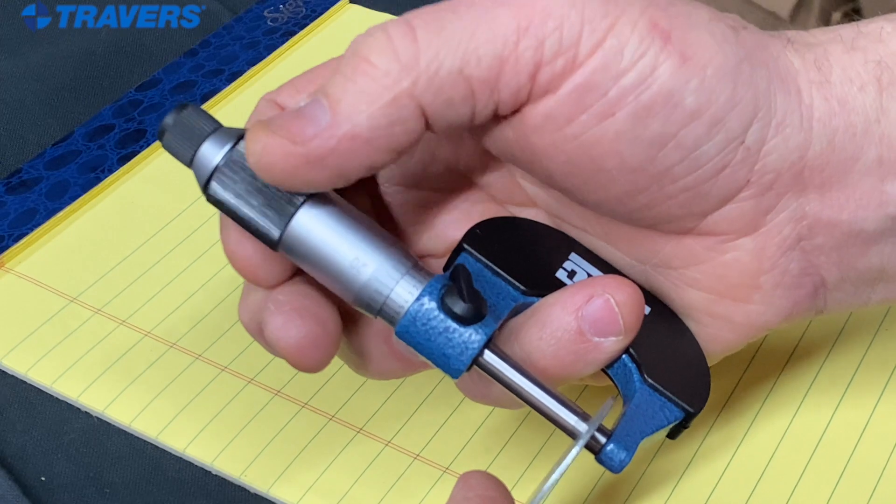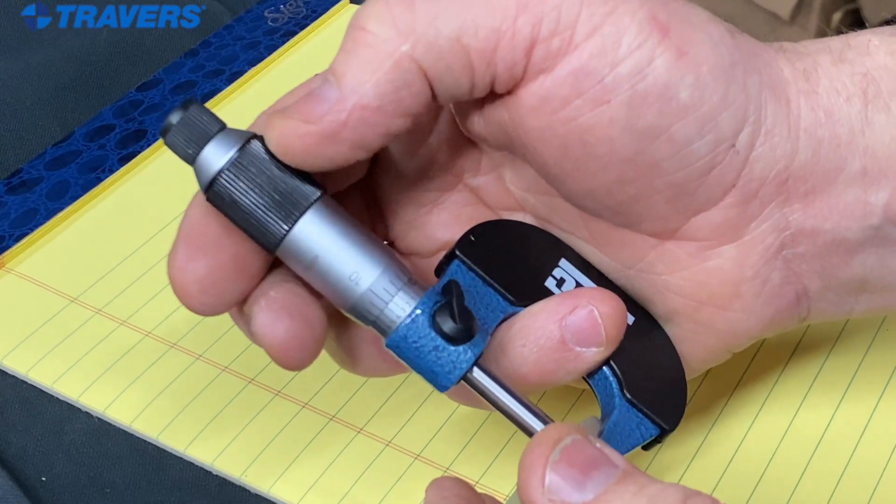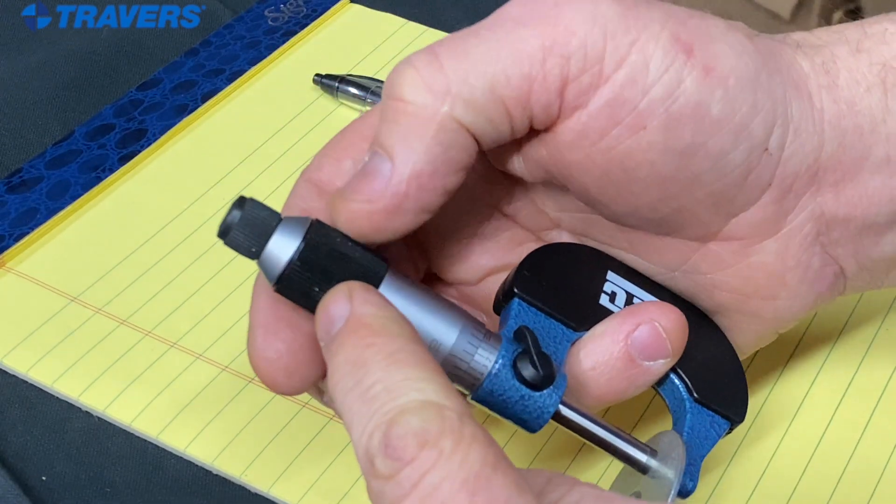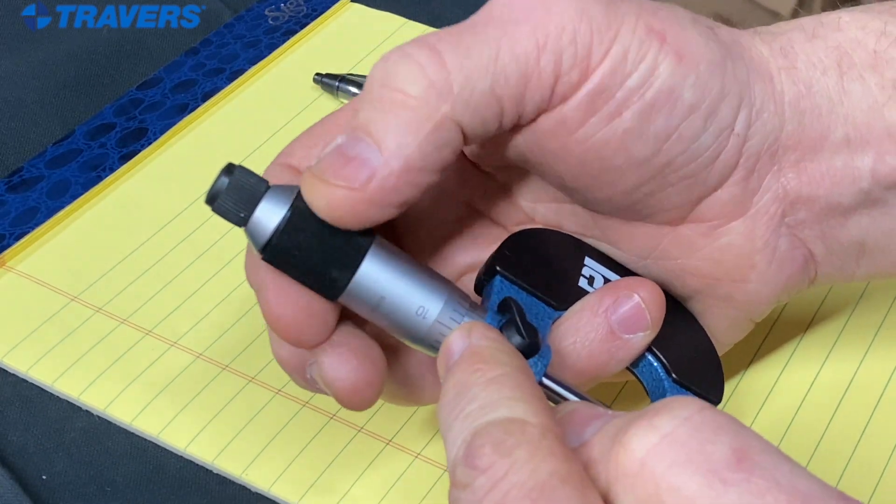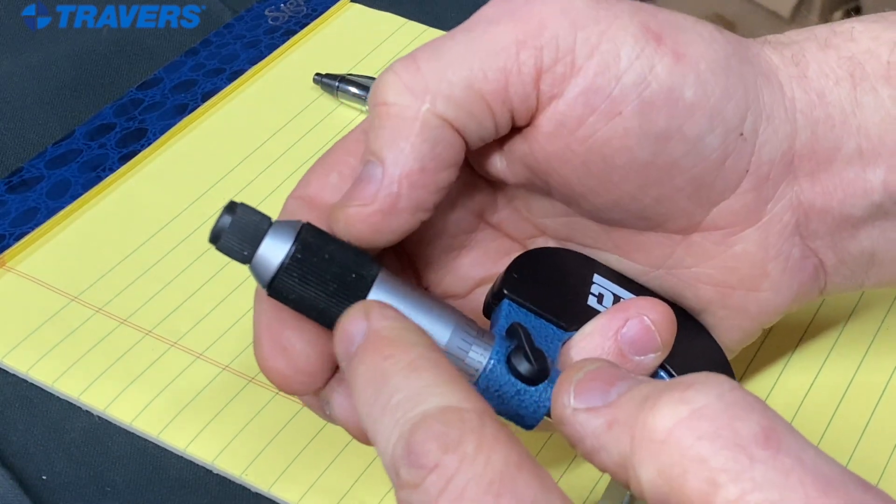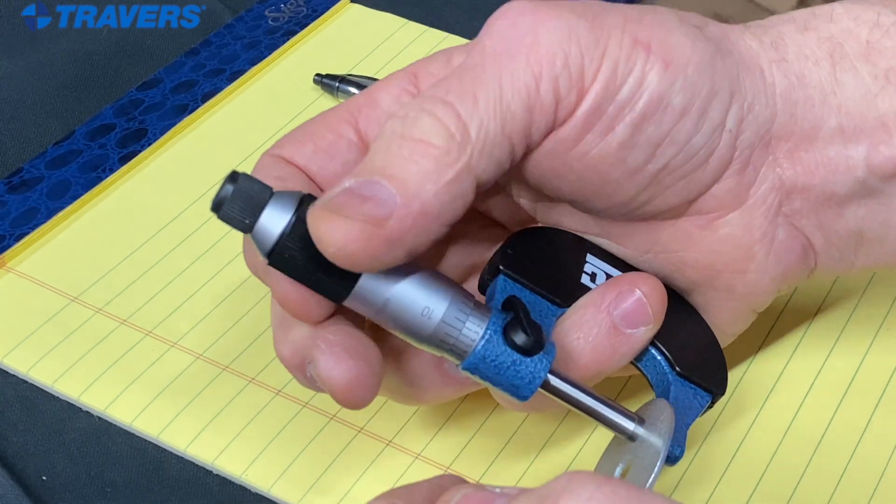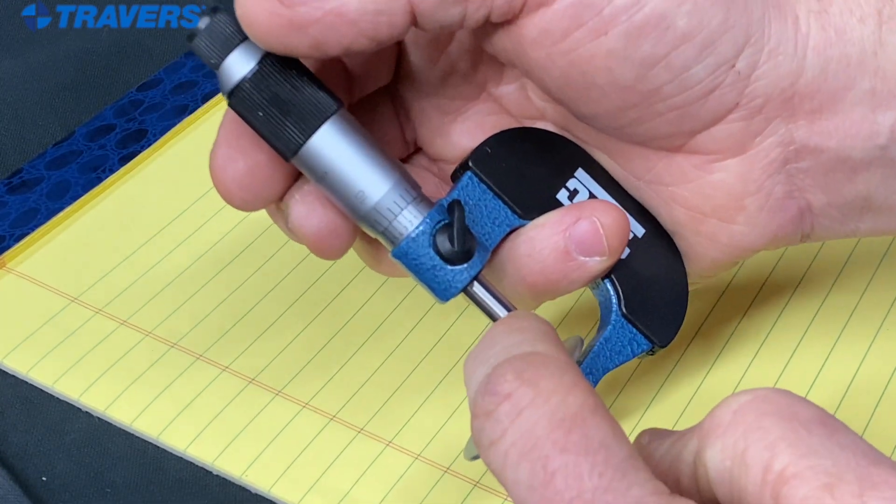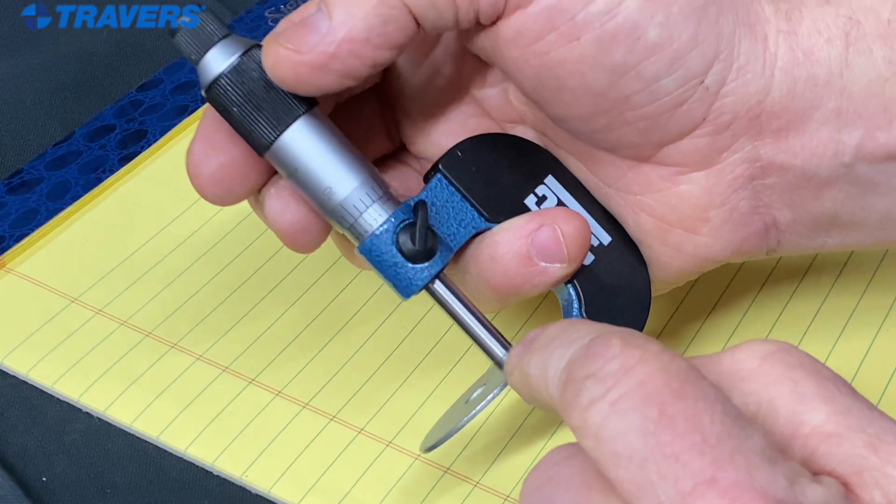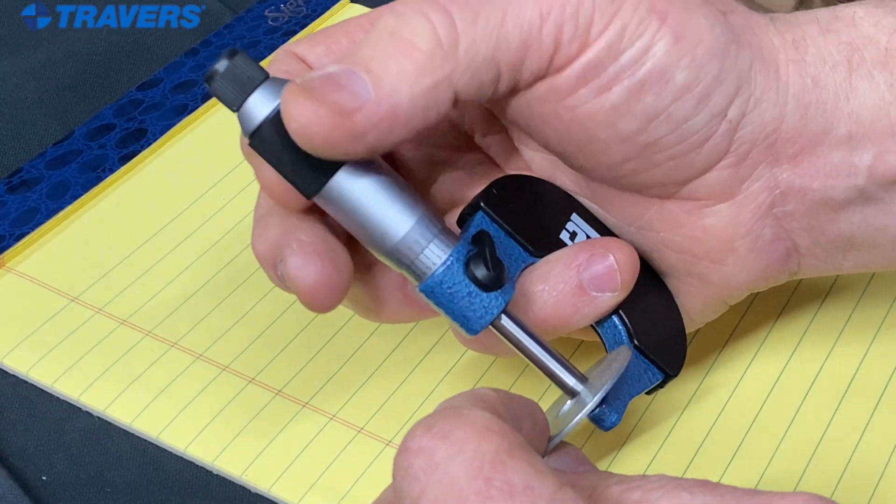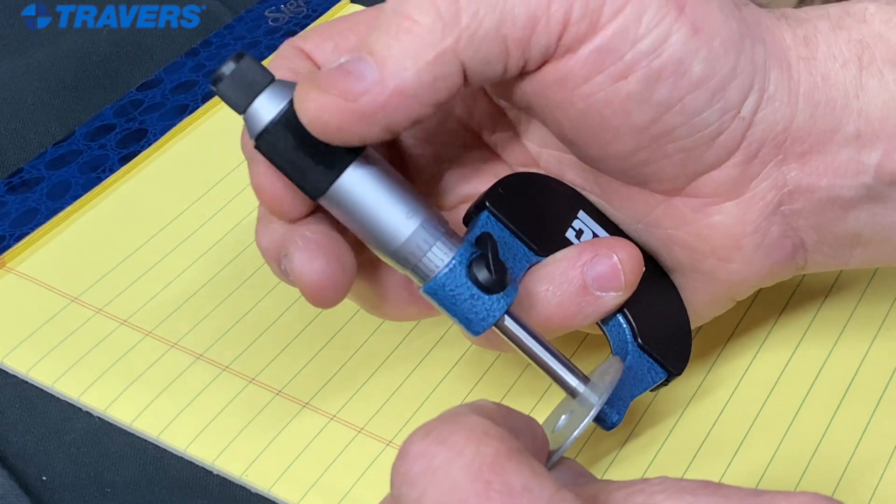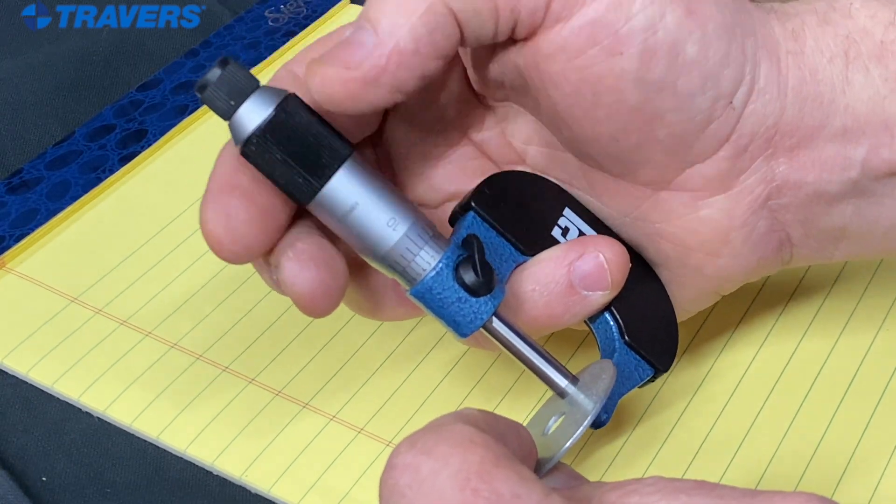So we're going to measure a washer. Notice up here, I'm turning the thimble, but the numbers aren't moving. This is a friction thimble. It slips when the anvil and the spindle are measuring your workpiece, but then if you turn it the other direction, it doesn't slip at all and it'll open it.